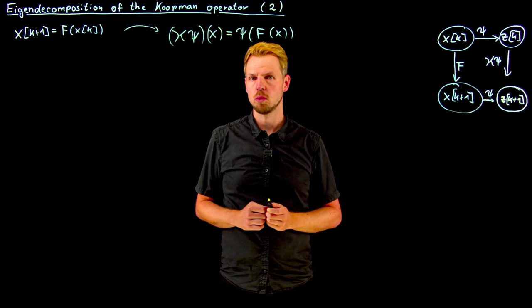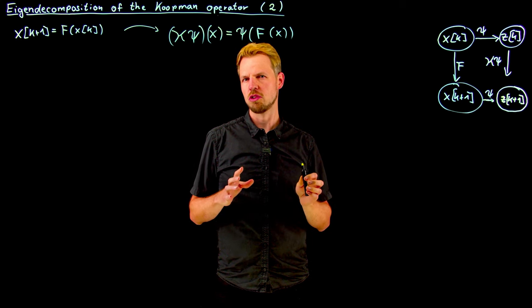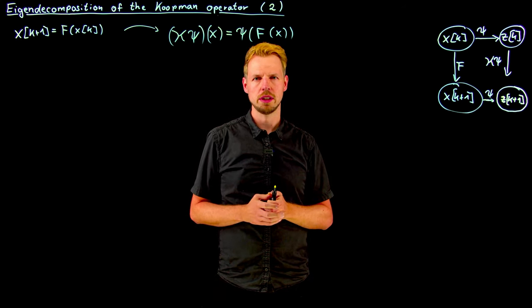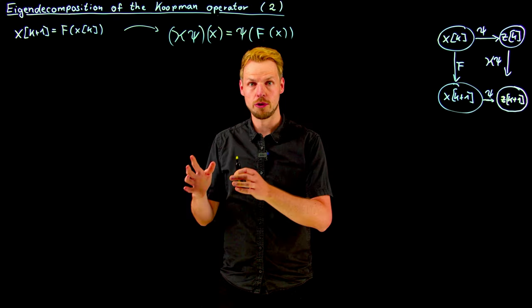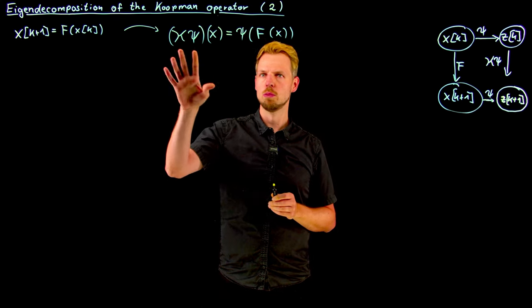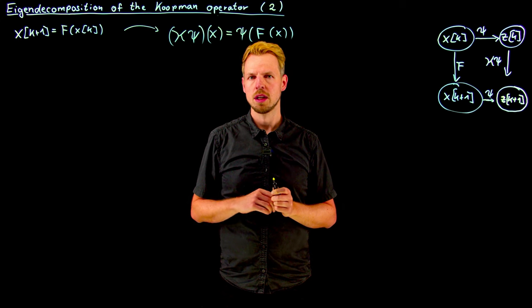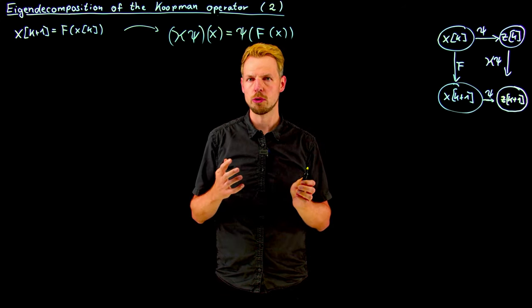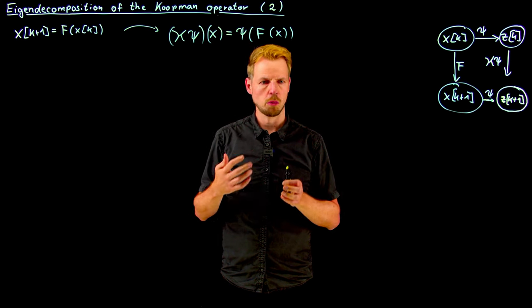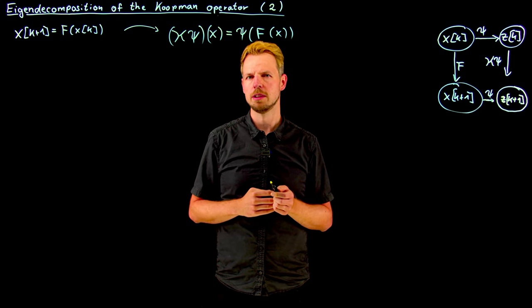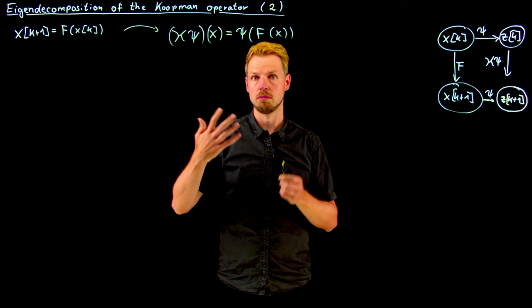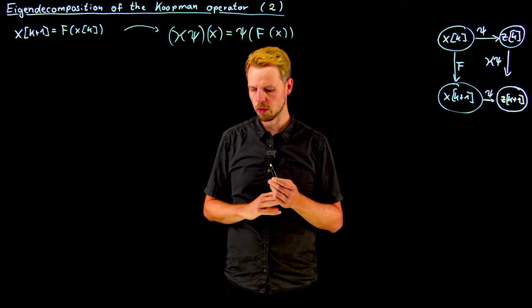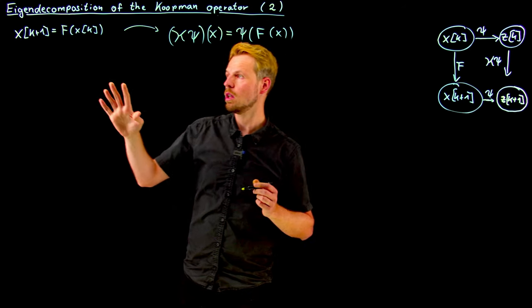In part one we mostly motivated why eigendecompositions are useful for linear dynamical systems, and this part is going to be about the transfer of this eigendecomposition to the Koopman operator setting. This is mostly going to be about eigendecompositions of linear operators, so functions where there's a lot of literature available. What I'm going to present is not new but just a viewpoint of how to compute this on the Koopman operator.